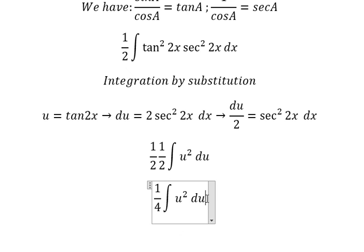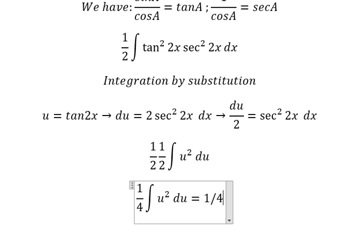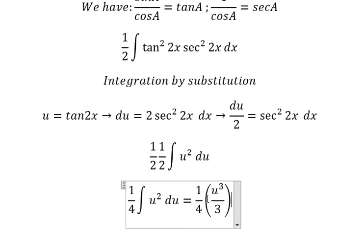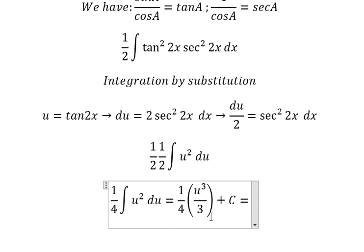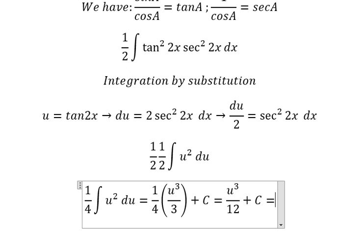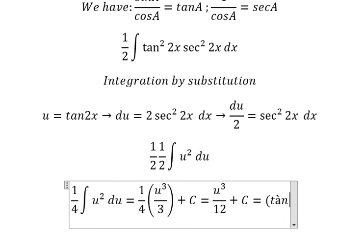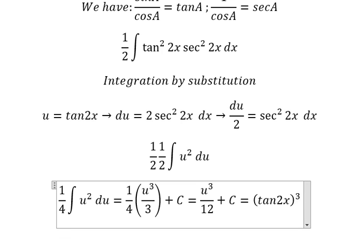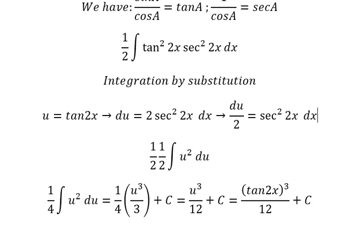The integral of U squared gives U to the power of 3 over 3, plus C. Multiplying number 3 and number 4 we get 12. So for U, which is tan 2x, our final answer is tan cubed 2x over 12 plus C. This is the end. Thank you for watching. See you soon.